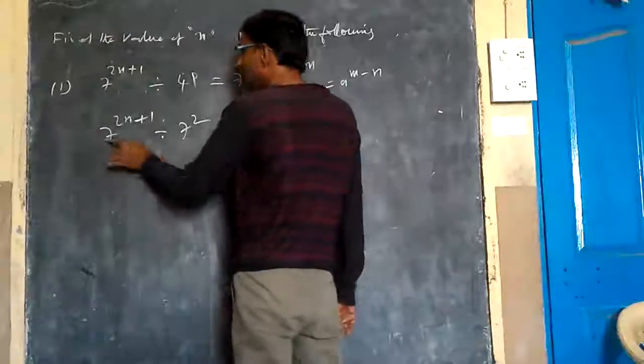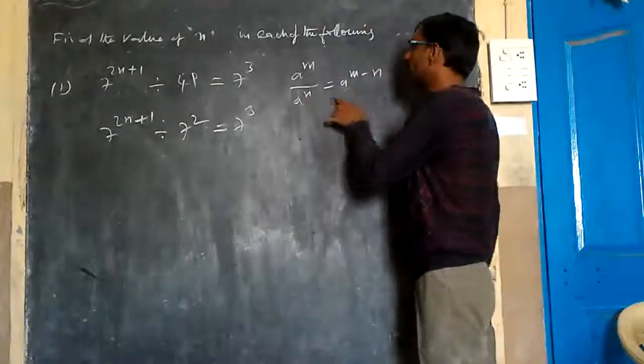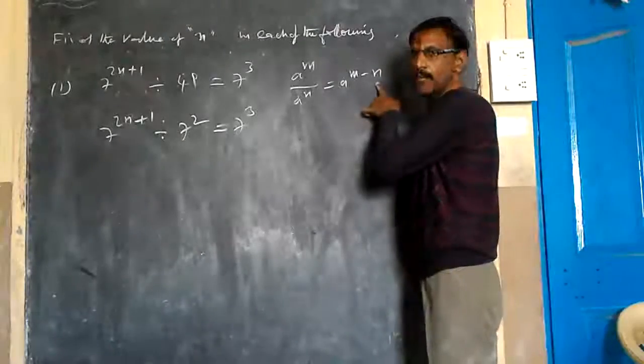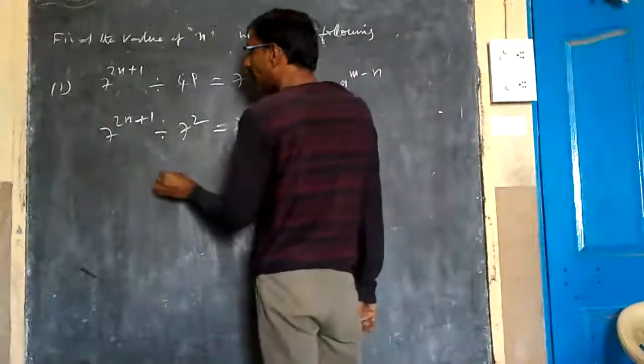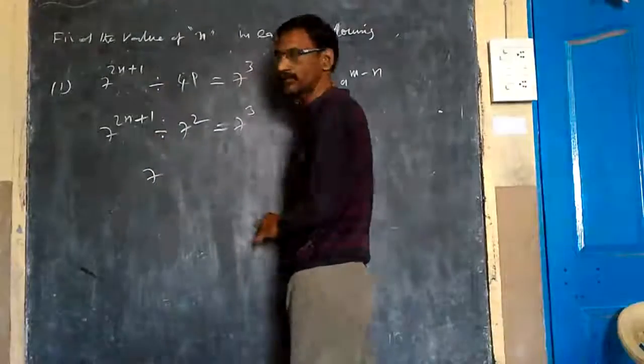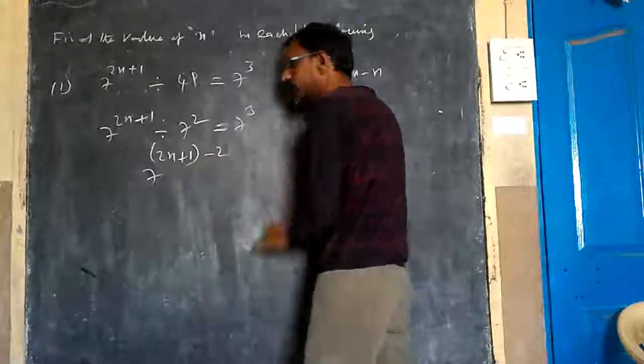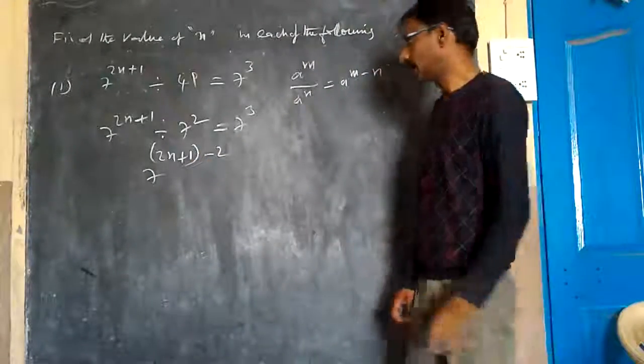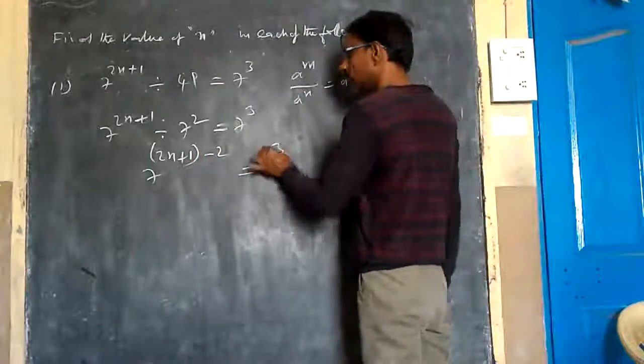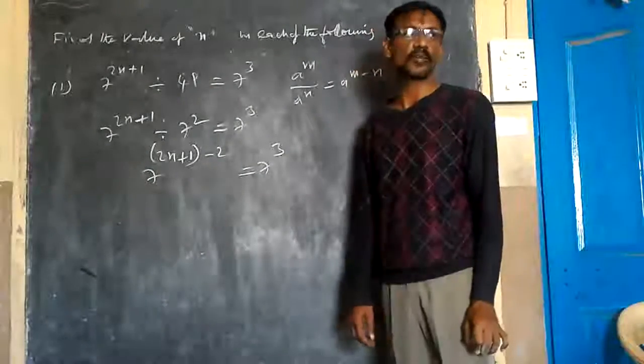So here, a to the power of m divided by a to the power of n equals a to the power of m minus n. Therefore, I can write this as 7 to the power of 2n plus 1 minus 2. Is it correct? Yes, sir. That equals 7 to the power of 3, or 7 cubed.